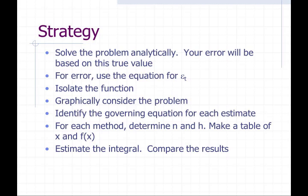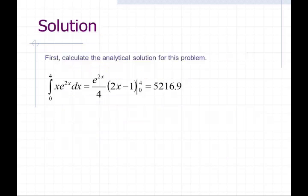To do that, you first have to isolate the function, graphically consider the problem, then identify the governing equation for each estimate, and for each method, determine n and h. Make a table of x and f(x), estimate the integral, and then compare your results. Our analytical solution is 5,216.9, or 5,217.